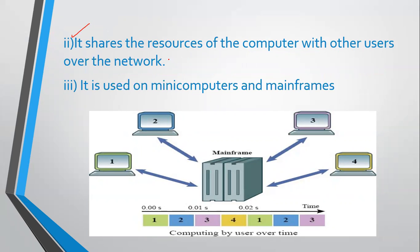Multi-user operating systems can share the resources of the computer with other users over the network, including CPU, memory, hard drives, and more. It is used on mini computers and mainframe computers. When all users are connected to the mainframe, they can share memory, hard drive, CPU, power, and files.